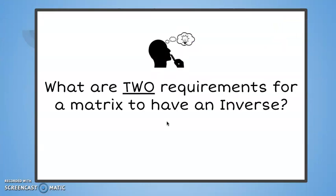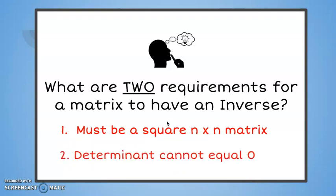Wow, we saw many ideas about matrices and their inverses in this lesson. As we conclude, consider this big idea. What are two requirements for a matrix to have an inverse? It must be a square n by n matrix and the determinant cannot equal zero.